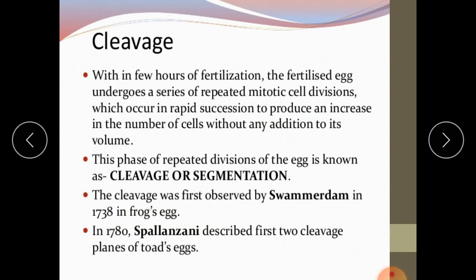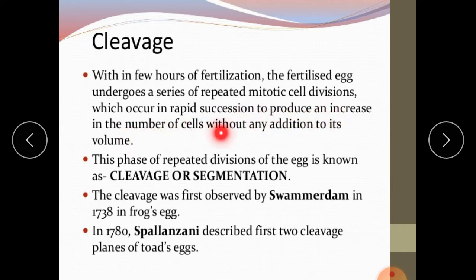So what is cleavage? Within a few hours of fertilization, the fertilized egg undergoes a series of repeated mitotic cell divisions which occur in rapid succession, producing an increase in the number of cells without any addition to its volume. Volume remains the same in the zygote — only the number of cells, called blastomeres, increases during cleavage.